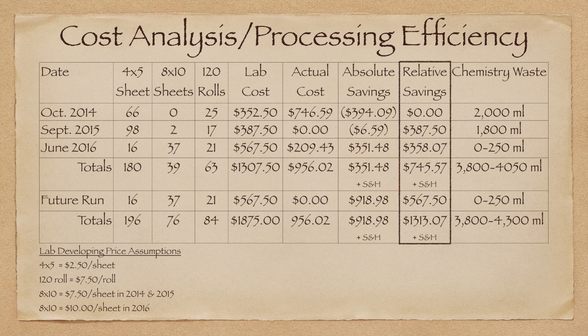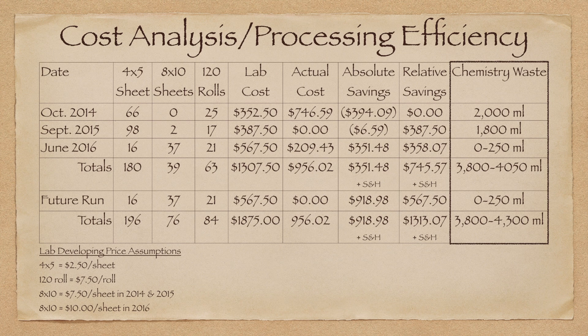For relative savings, I'm ignoring my initial sunk cost of $746.59 and evaluating the savings on a per occasion analysis. This column evaluates my savings on the amount of money that I have to spend to run the process on that particular occasion — money that is not leaving my wallet at the time of processing — and to date has totaled about $745 plus shipping and handling. The last column shows the amount of chemistry that I wasted owing to not hoarding enough film to use all of the chemistry, or chemistry loss because of an undetected crack in my containers. If I hadn't wasted this much chemistry, I would have significantly increased my savings. A total of four liters of wasted chemistry would have processed almost half of my film from my June 2016 run.